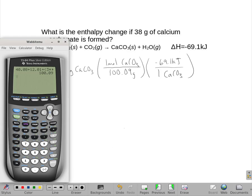So calculator-wise, 38 divided by that molecular mass, and then multiply that small number there by that negative 69.1, and we get